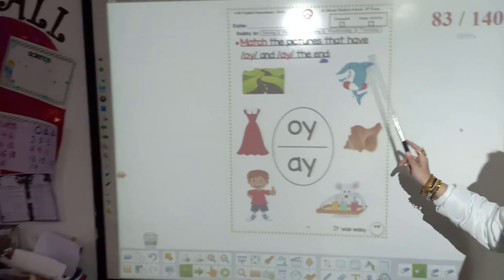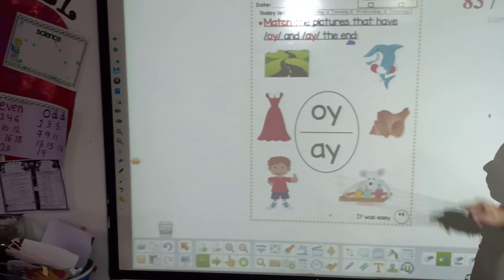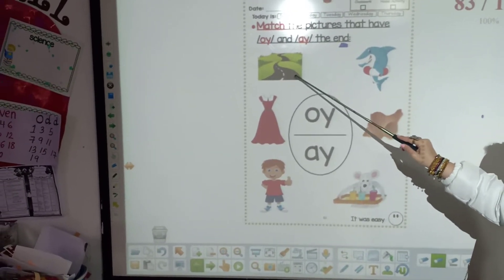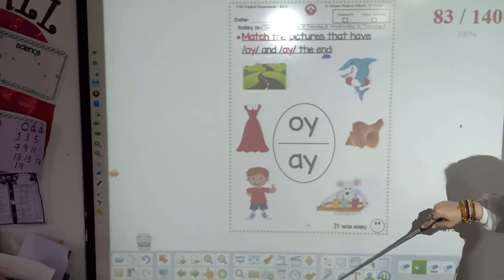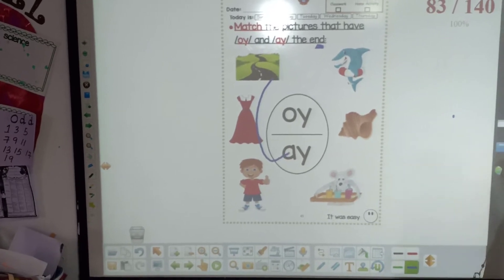Match the pictures that have oy and ay at the end. What is this picture? Way. What? A. So, way has oy or ay? Ay. Match the word way with ay at the end.